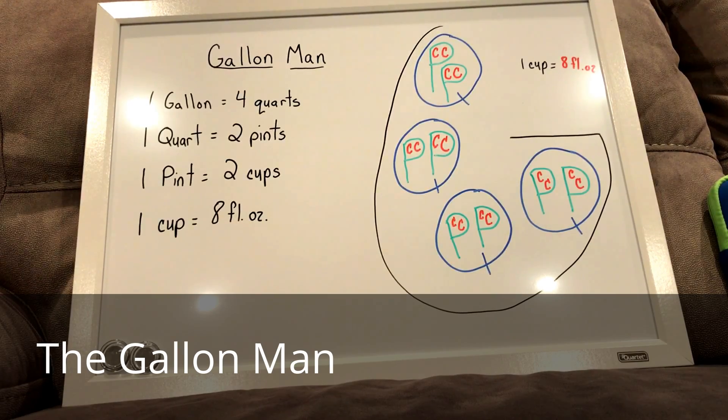And if you count up how many P's we see inside of the entire G, so inside the entire gallon, there are one, two, three, four, five, six, seven, eight. So there are eight pints inside of a gallon.